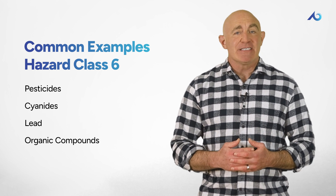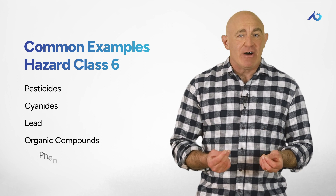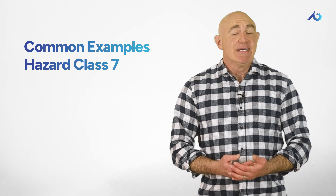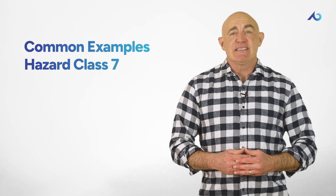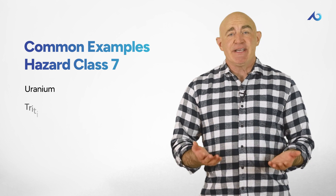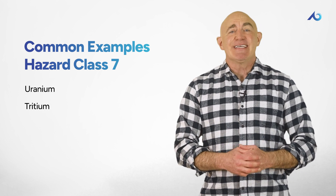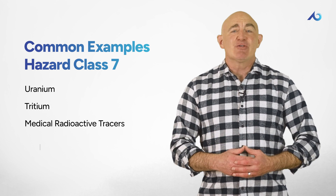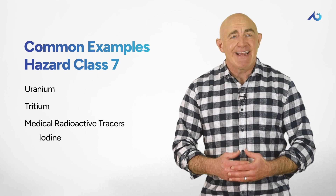Class 7 includes any material that is unstable, can undergo radioactive decay, and emit radiation. Some common examples of hazard class seven include uranium, tritium — which is used in emergency exits and other signs — and medical radioactive tracers like iodine.